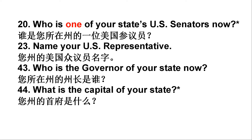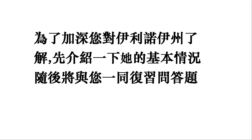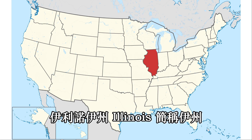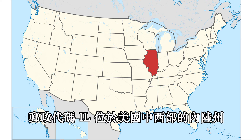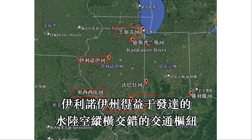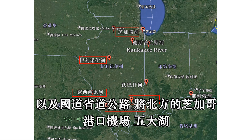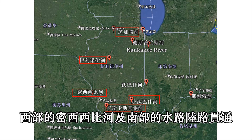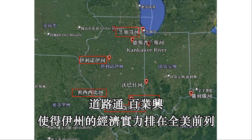伊利诺伊州，简称伊州，州代码IL，位于美国中西部。经济实力强，伊利诺伊州得益于发达的水路和纵横交错的交通枢纽。圣劳伦斯航道、伊利诺伊河，以及国道省道公路，将芝加哥港口机场、五大湖、密西西比河及南部水路贯通，使得伊州的经济实力排在全美前列。